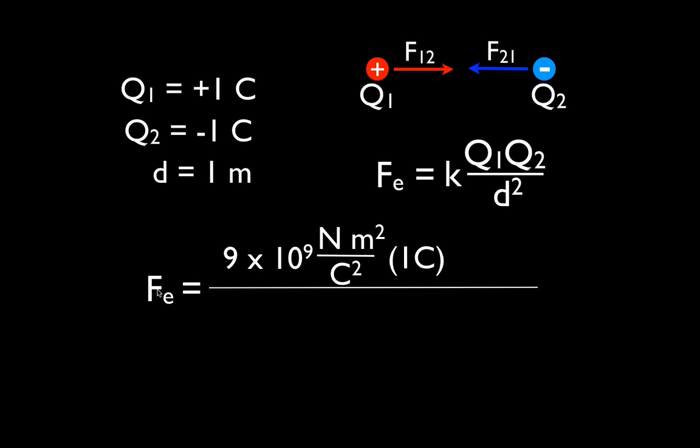Now when we do this, we don't use the negative sign, we just put in one Coulomb, one Coulomb. We just put in the magnitude of the charge because Coulomb's Law is the law we use to determine the magnitude of the force. The direction we determine based on the fact that the charges are opposite charges. Coulomb's Law we only use to determine the magnitude of the force.